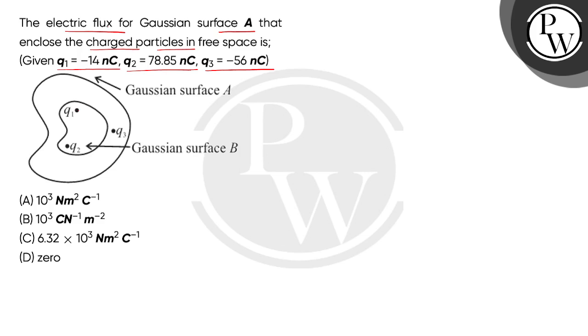We have to find electric flux here, so let's use Gauss theorem. According to Gauss's law, we will get the electric flux that is 1 by epsilon naught times the total charge enclosed by the surface, where epsilon naught is the permittivity of free space.